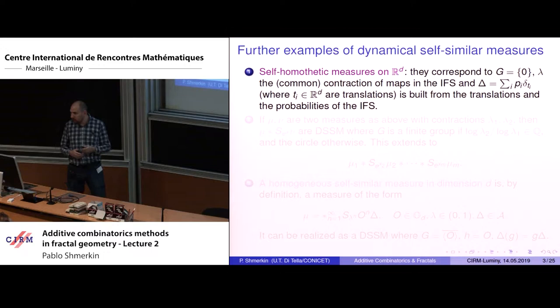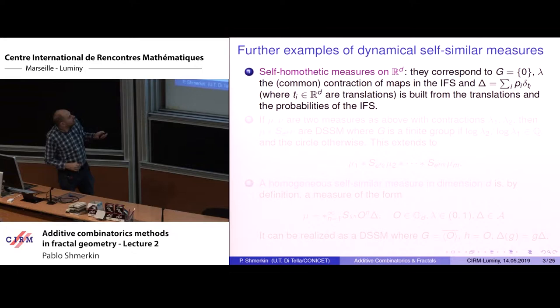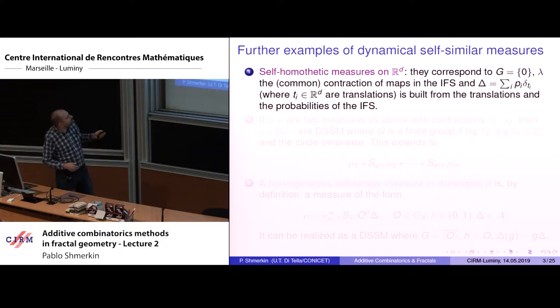Let me generalize these examples. First, this definition makes sense in R^d for any d, though the main theorem is only on the real line — in higher dimensions things are more complicated and I'm trying to work on a generalization without much luck so far. In any Euclidean dimension, if we take a constant delta, we get a classical self-similar measure where the similarities are homotheties.